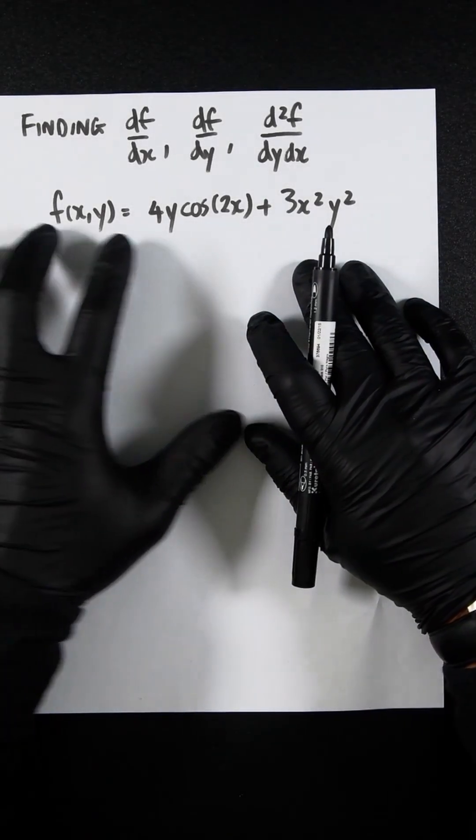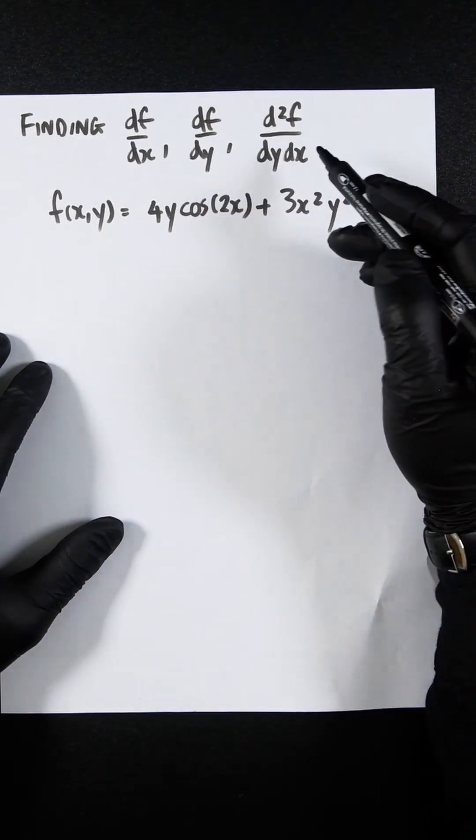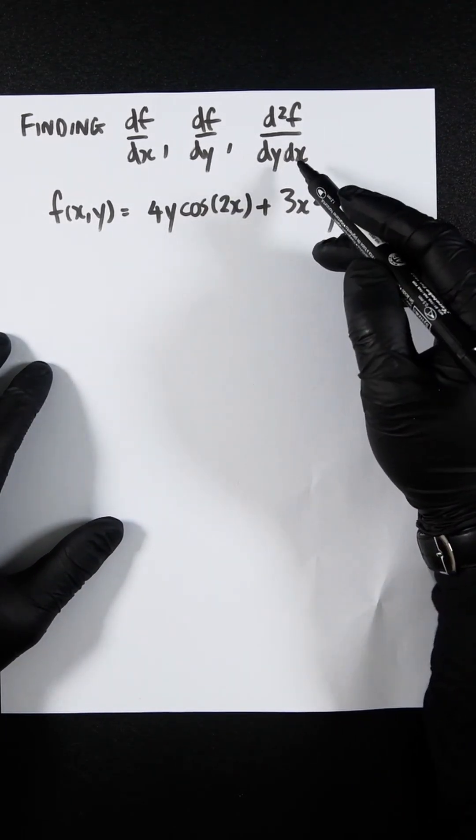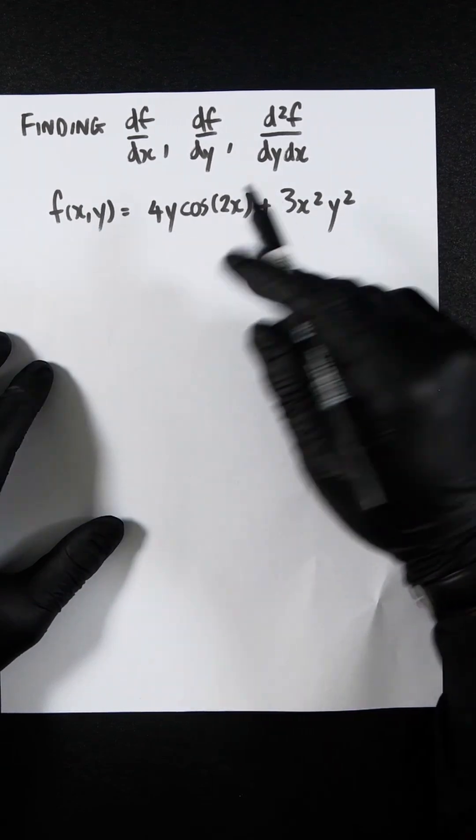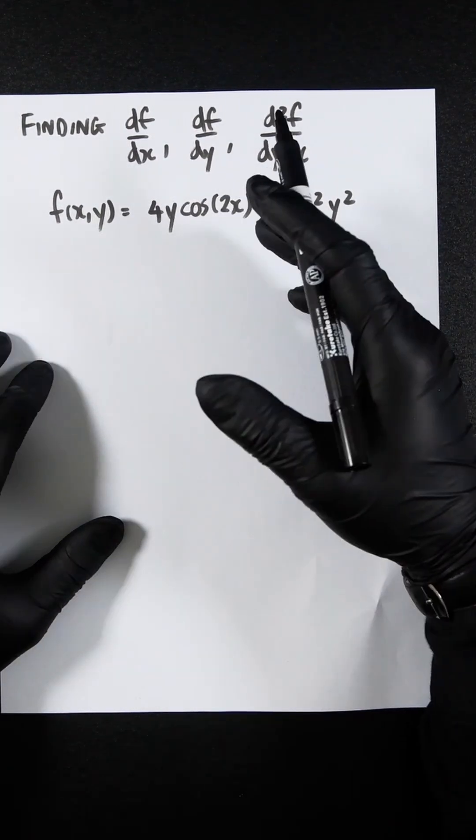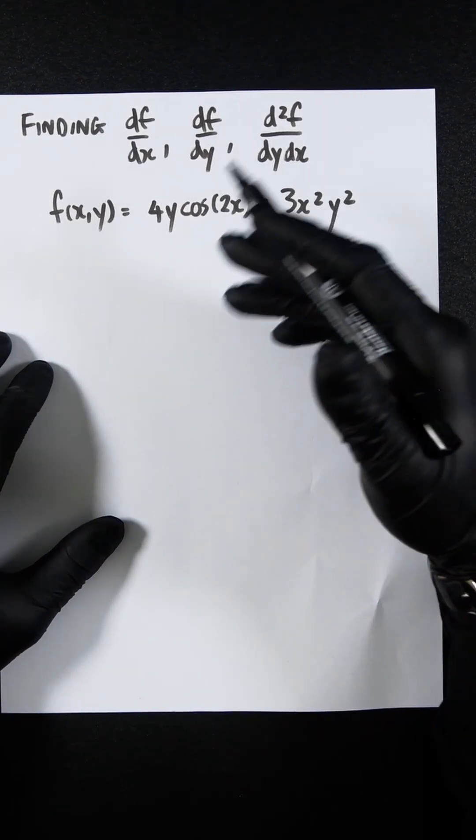If we're given a function that has x's and y's in them, but we need to find df/dx, df/dy, or d²f/dxdy, we will do something called partial derivatives. We will ignore or hold constant the values that we aren't differentiating and just multiply them in afterwards.